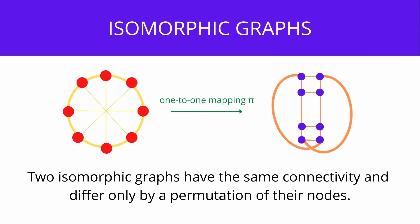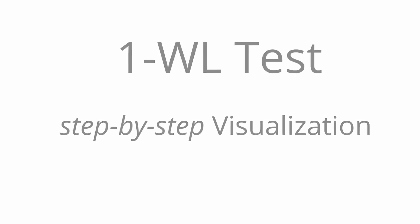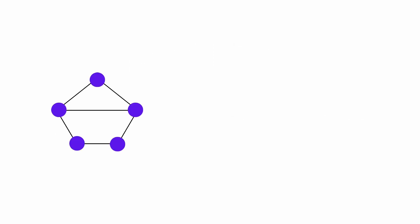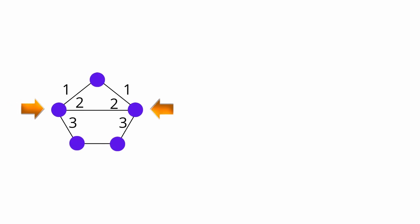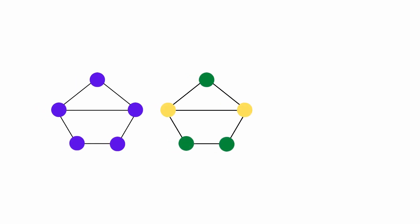Look at these two graphs. Are they isomorphic? Let me show you that they are. We have a step-by-step visualization of the WL test. We start with five nodes and a simple graph. The first step is we look at each node specifically. The two outermost nodes have three outgoing connections, so let's color them yellow.